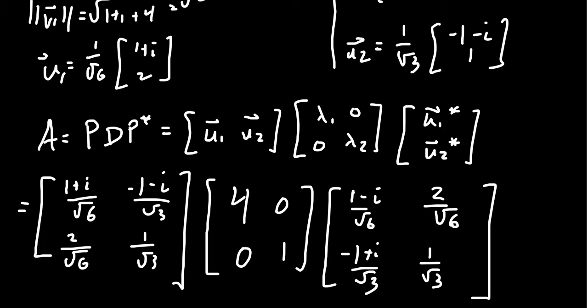This is again the whole enchilada, but with the extra feature that we worked with complex numbers and achieved a unitary diagonalization — which is the complex counterpart of an orthogonal diagonalization.